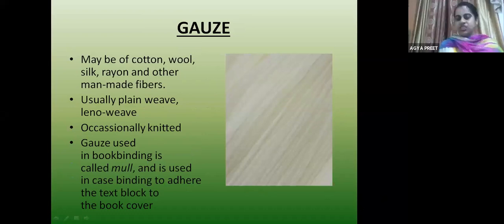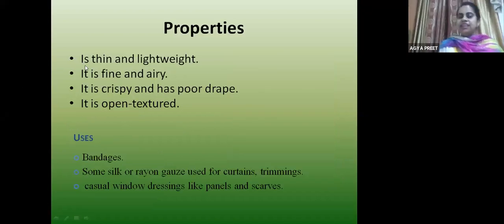Gauze is made from cotton, wool, silk, rayon and other man-made fibers. Usually plain weave or leno weave, occasionally knitted, and mostly gauze fabric is used for book binding. Properties: lightweight, thin, crispy, poor drape and open texture — that is why bandages are made of gauze fabric. Some silk and rayon gauze are used for curtains and trimming, and casual window dressing like panels and scarves.